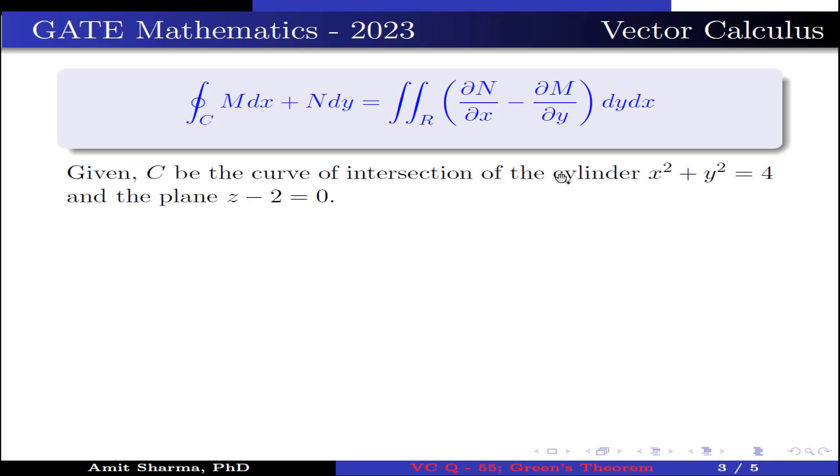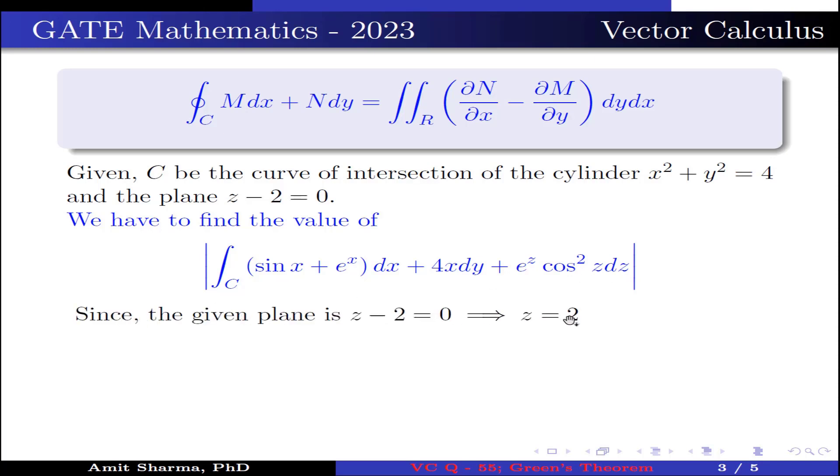Now, given C be the curve of intersection of the cylinder x² + y² = 4 and the plane z - 2 = 0, we have to find the value of |∫_C (sin x + e^x)dx + 4x dy + e^z cos² z dz|.